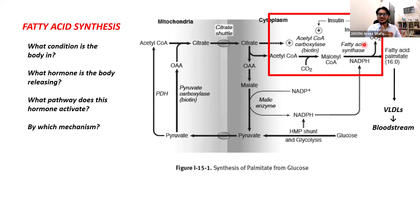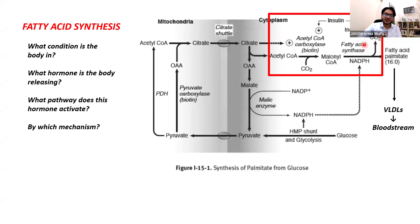That's why fats are the major storage form of energy in the body. And that's why in glycogen storage diseases you covered in module 1, patients had liver enlargement and muscle damage — because there's only a limited amount of glycogen you should normally be storing.